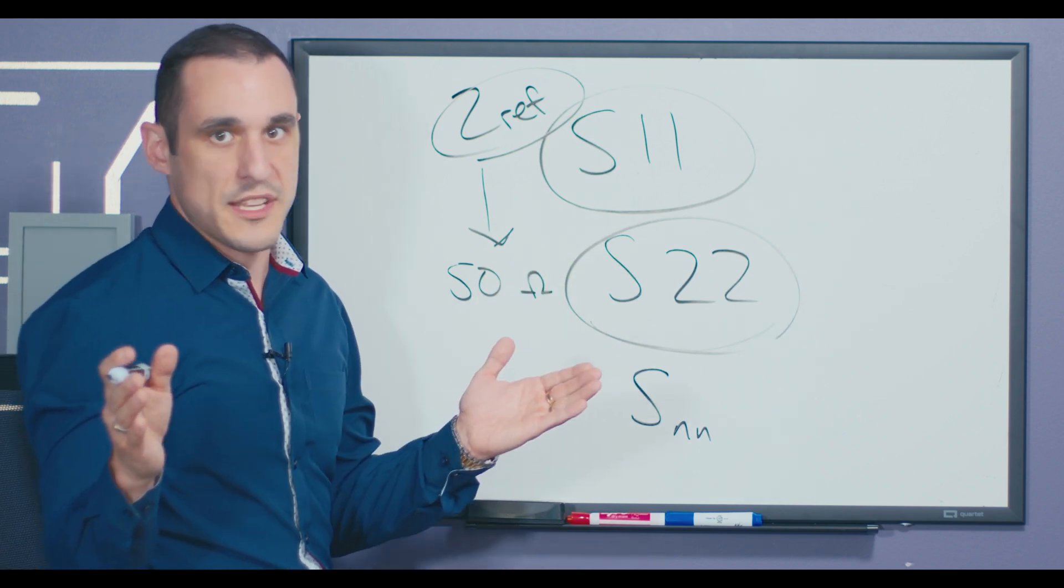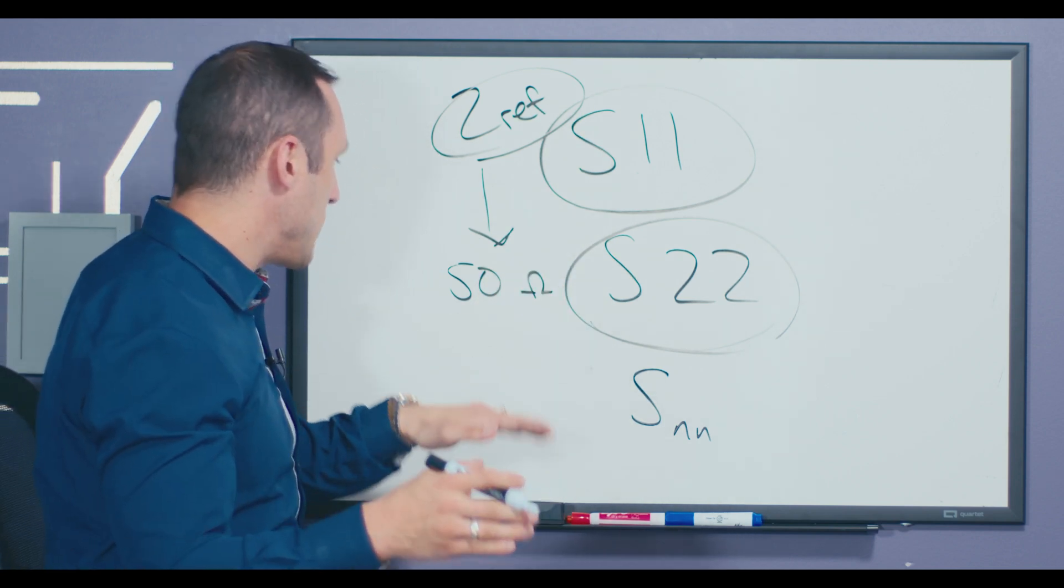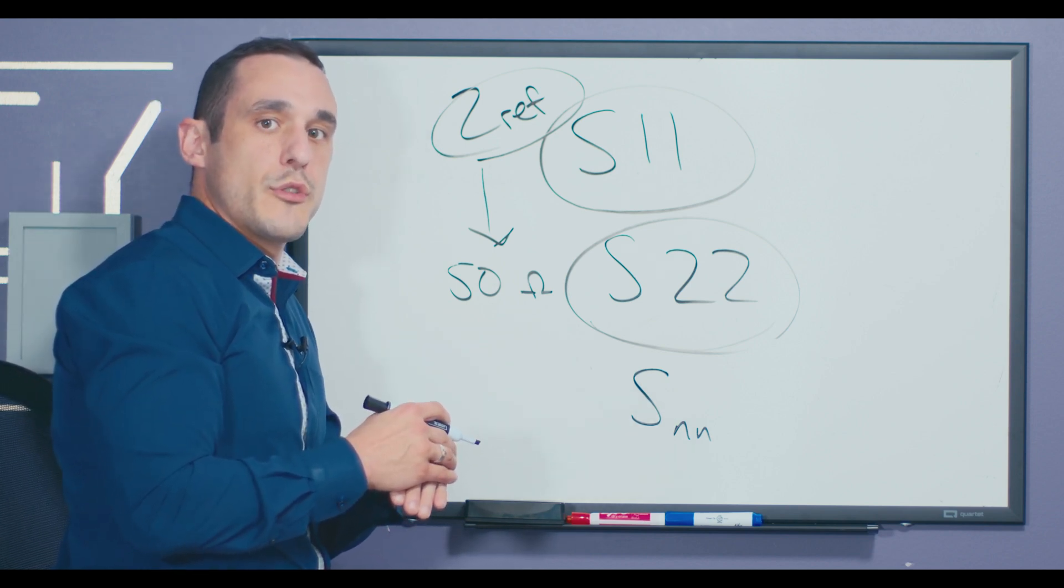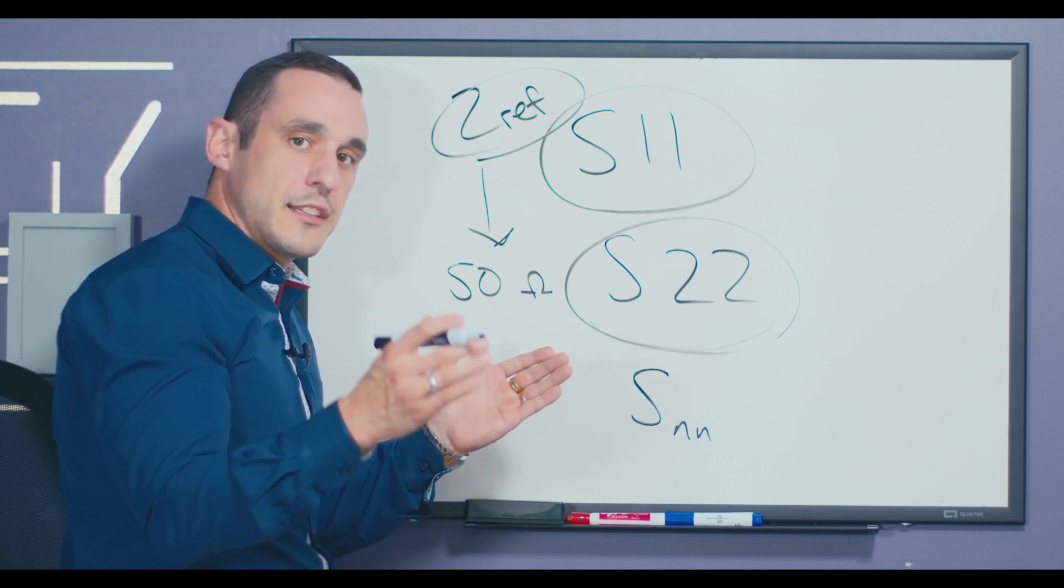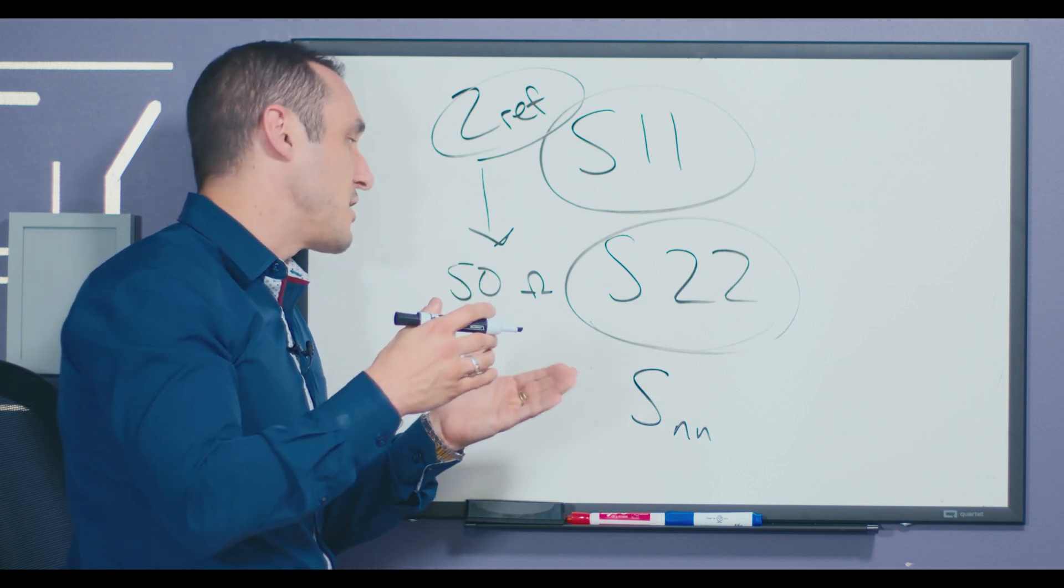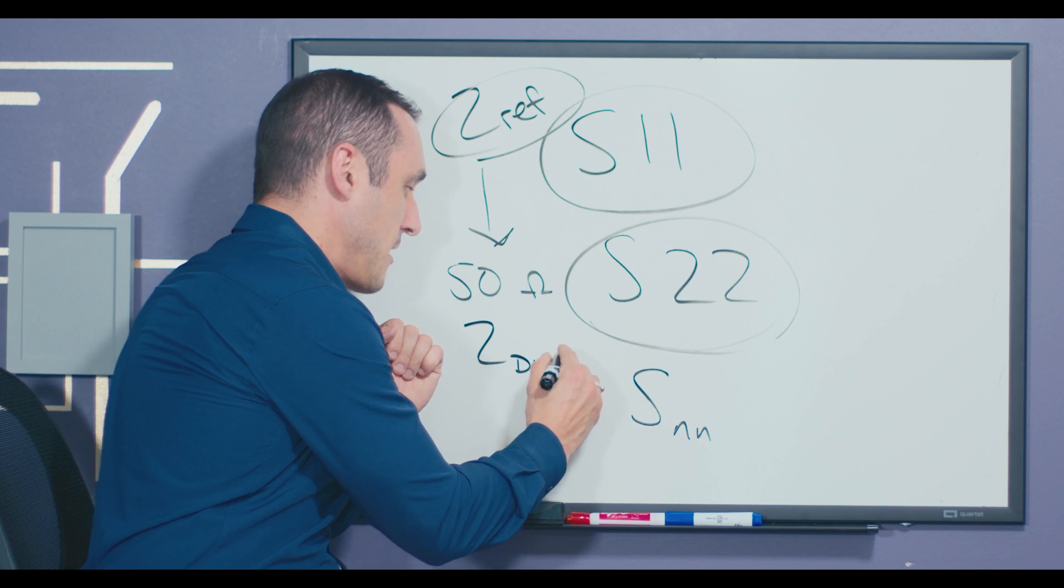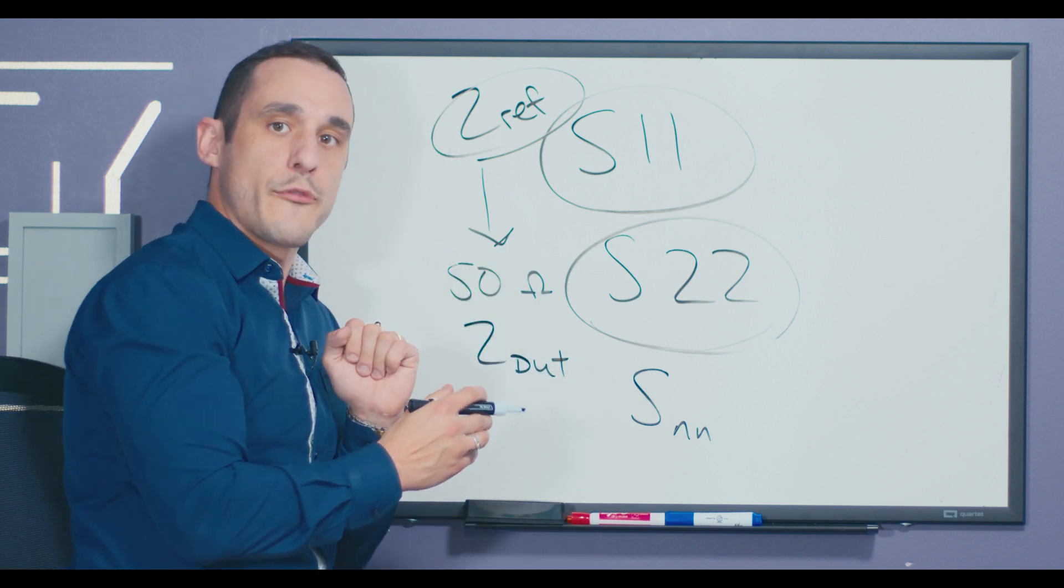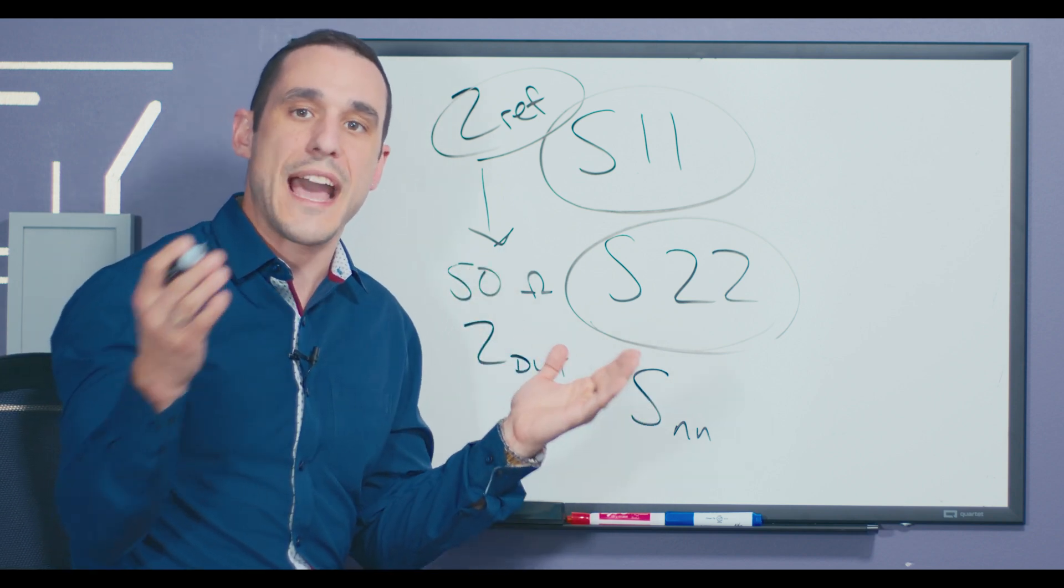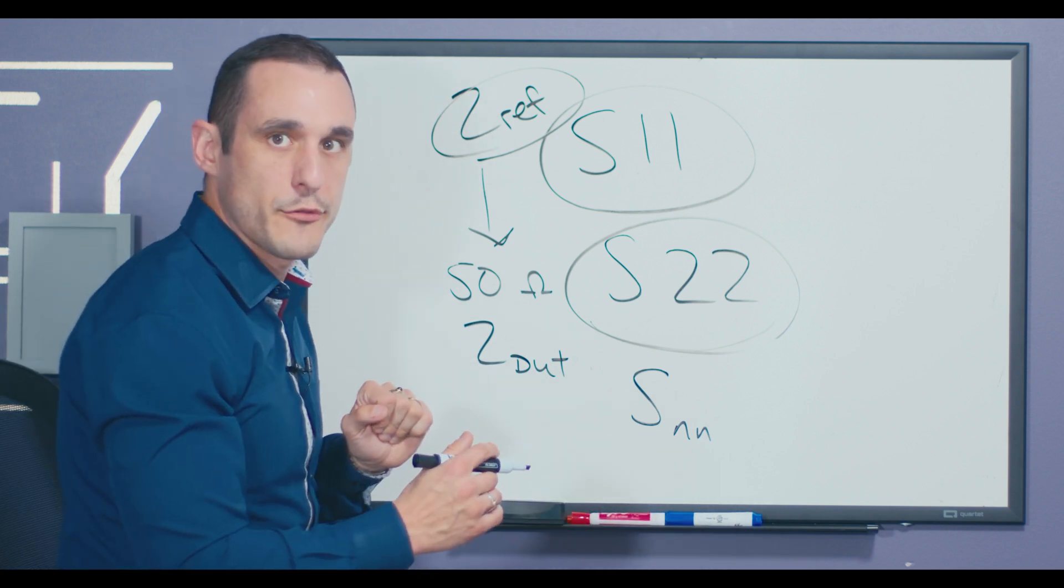Sometimes in a 70 or 75 ohm system it's going to be set differently, but generally it's set to 50 ohms. And so what you're doing is you are comparing the electromagnetic wave energy that is reflected from your impedance of your device under test at the interface with a 50 ohm reference. So in order to do this we have to calibrate our instrument against a 50 ohm reference.